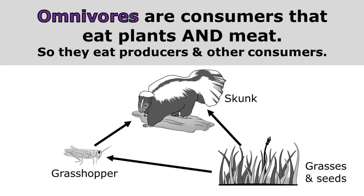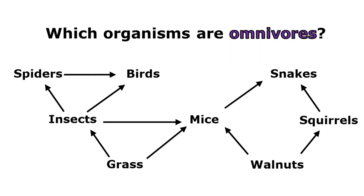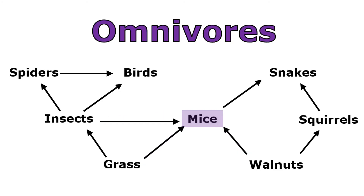Omnivores are consumers that eat both plants and meat, so they eat producers and other consumers. For example, this skunk is eating grasses and seeds as well as grasshoppers, so it is an omnivore. Here we're asked which organisms are omnivores. The mice are eating grasses and walnuts, which are producers, and they're also eating insects. So because the mice are eating plants and other animals, the mice are omnivores.